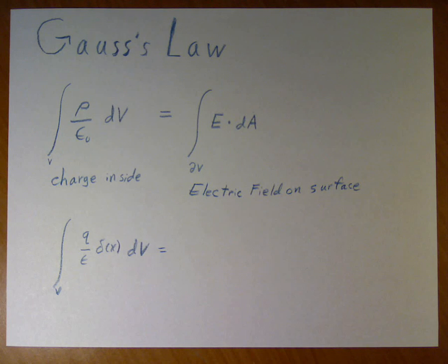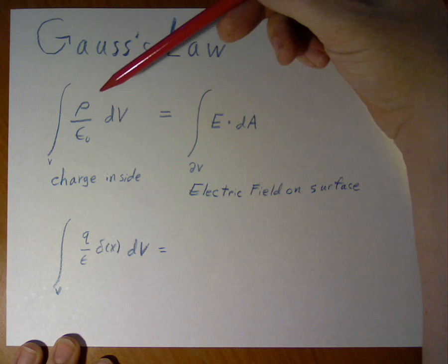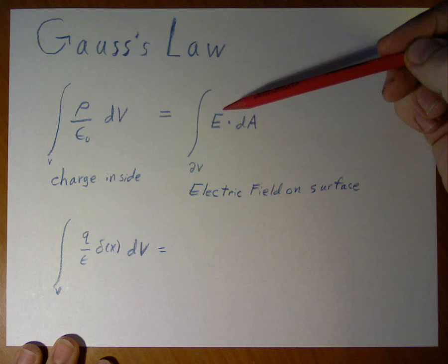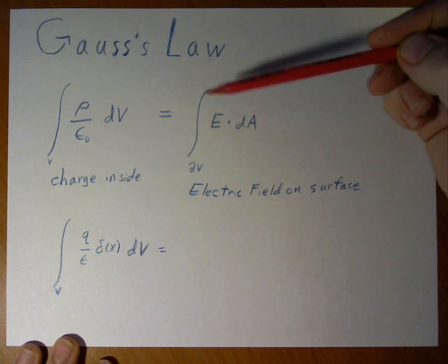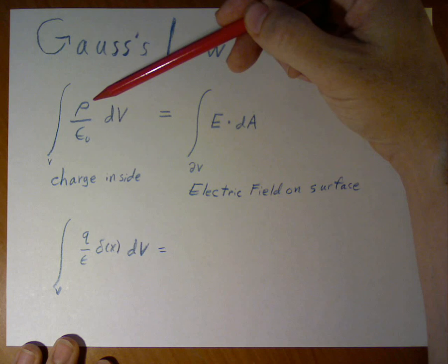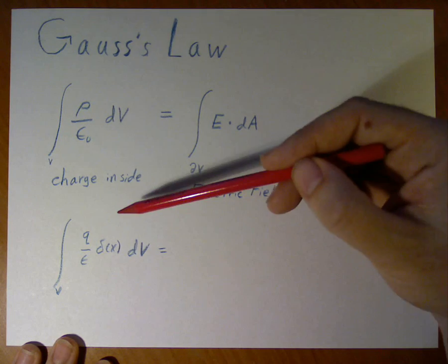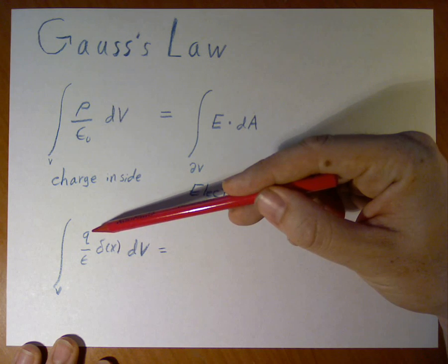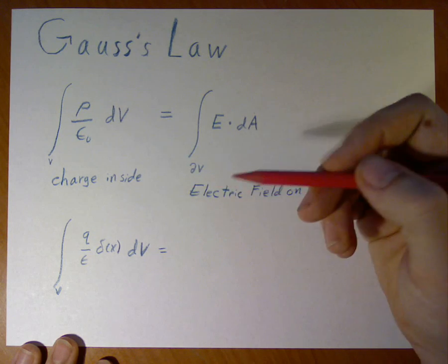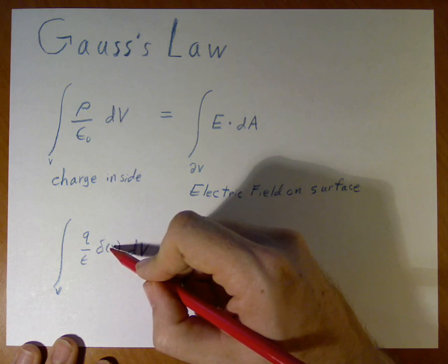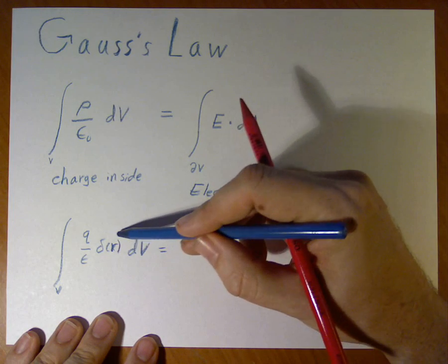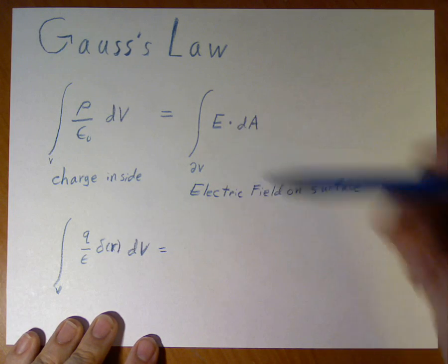Gauss's law helps us relate the quantity of charge inside a volume to the electric field on the surface of a volume. We can do this either with a generic charge density, as we have in this case, or with a point charge, as in this case, or more complicated situations — where this would properly be represented with a delta function, a radial delta function.